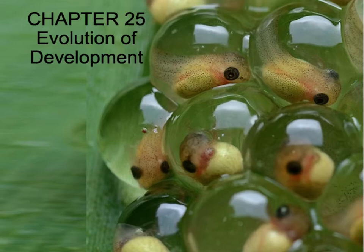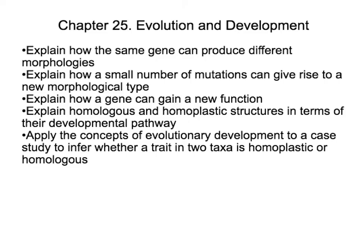Here we're going to see how changes in those genes — where and when they are expressed — can result in big changes for the organism, but also can lead to the formation of new species. For this chapter, we're going to talk about how the same gene can produce different morphologies, how a small number of mutations can give rise to a different morphological type, how a gene can gain a new function, and how we can use those changes in developmental pathways to compare whether a structure is homologous or homoplastic, and to understand whether two traits share the same evolutionary origin or come from different origins.